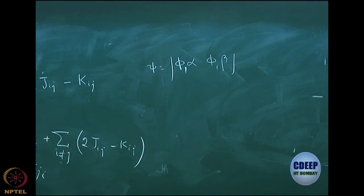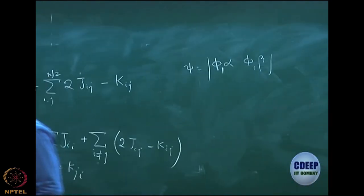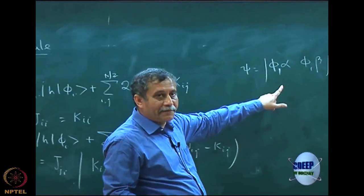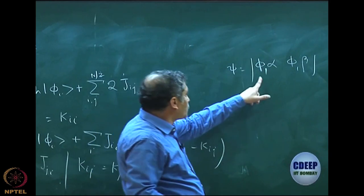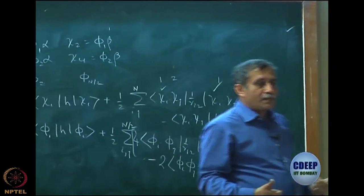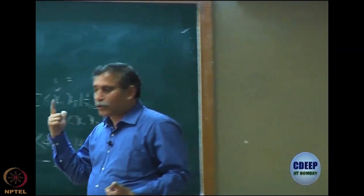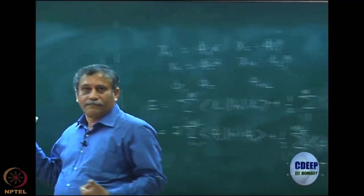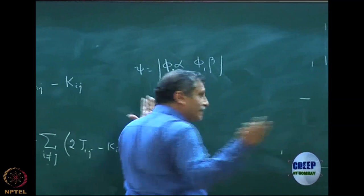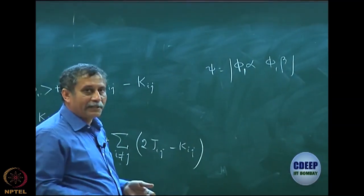So I must specifically write phi_1 alpha and phi_1 beta. This is a closed shell by my definition — you have two spin orbitals, one alpha spin orbital and one beta spin orbital, and the space parts are identical: phi_1. So by my definition it is a closed shell. All this you know already, but I am putting it in a very rigorous perspective now.